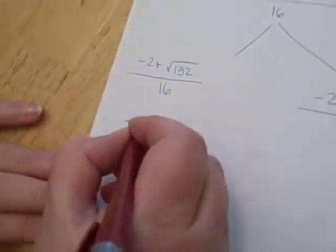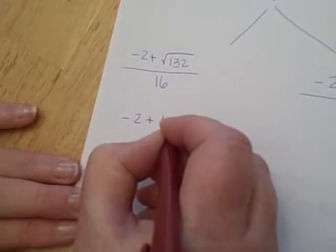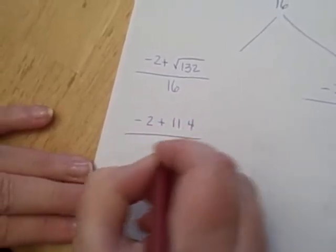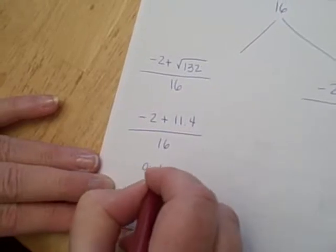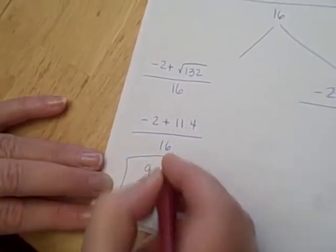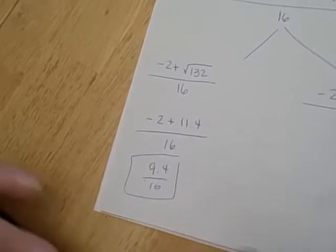So if you do negative 2 plus 11.4 all over 16, you get 9.4 over 16. And that's your answer on one side of your parabola.